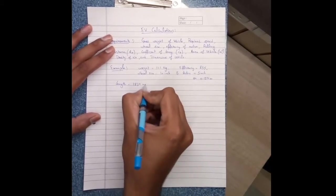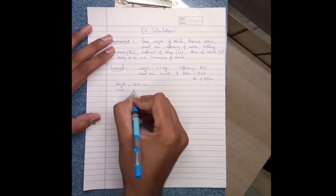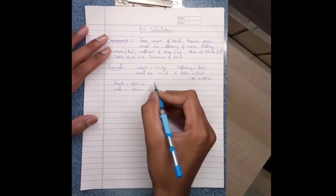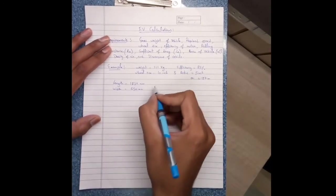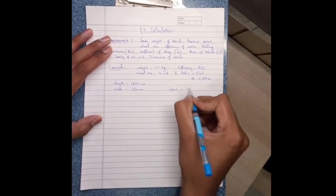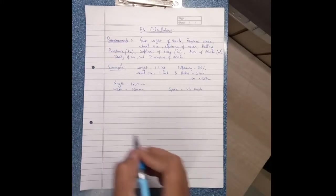1834 mm, width 650 mm, and next is speed 45 km per hour. So these are the required values.